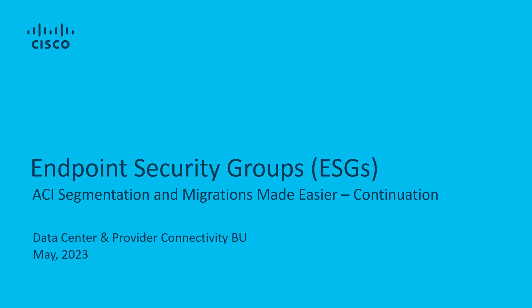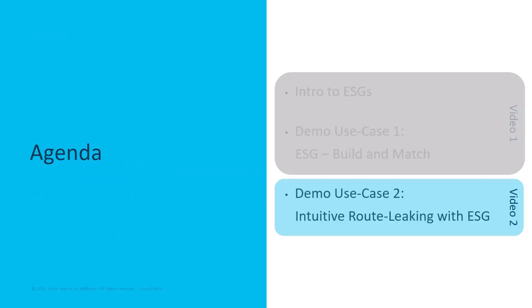In this video we will continue our journey with the concept of endpoint security groups, which makes ACI segmentation designs and configurations easier. Last time we went through an introduction to the ESG concept and I showcased the first ESG building and matching demo. Today we'll take a step further and cover simplified route leaking with ESG, backed by a demonstration with two scenarios. Let's get started.